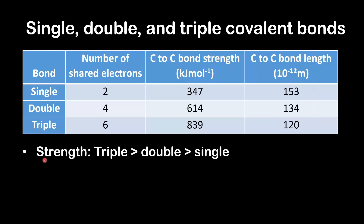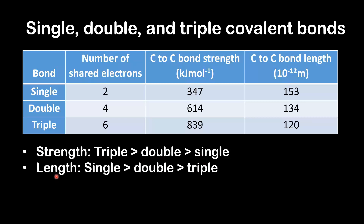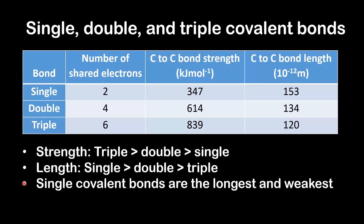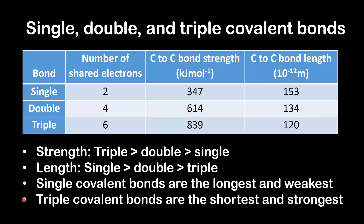In order of strength with strongest first: a triple bond is stronger than a double bond, which is stronger than a single bond. In order of length with longest first: a single bond is longer than a double bond, which is longer than a triple bond. So single covalent bonds are the longest and weakest, and triple covalent bonds are the shortest and strongest.